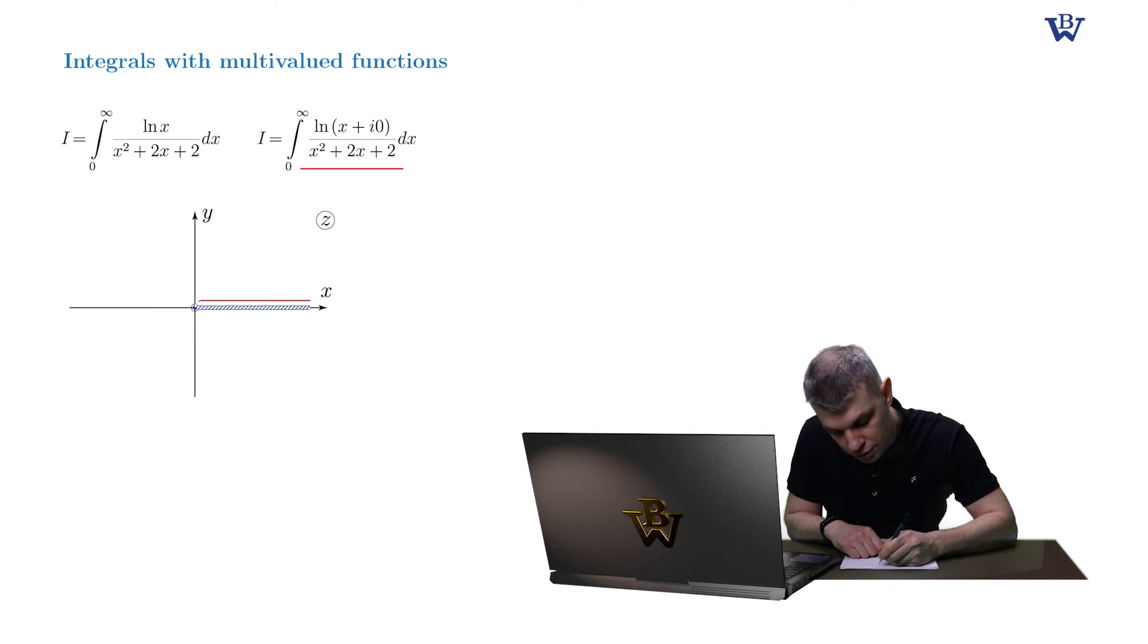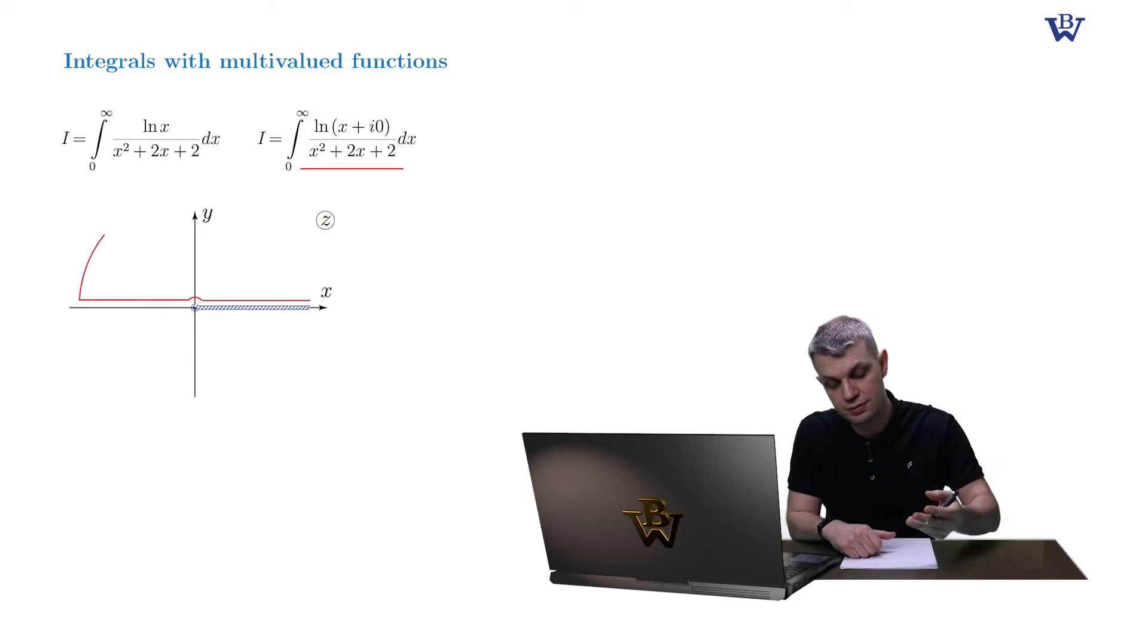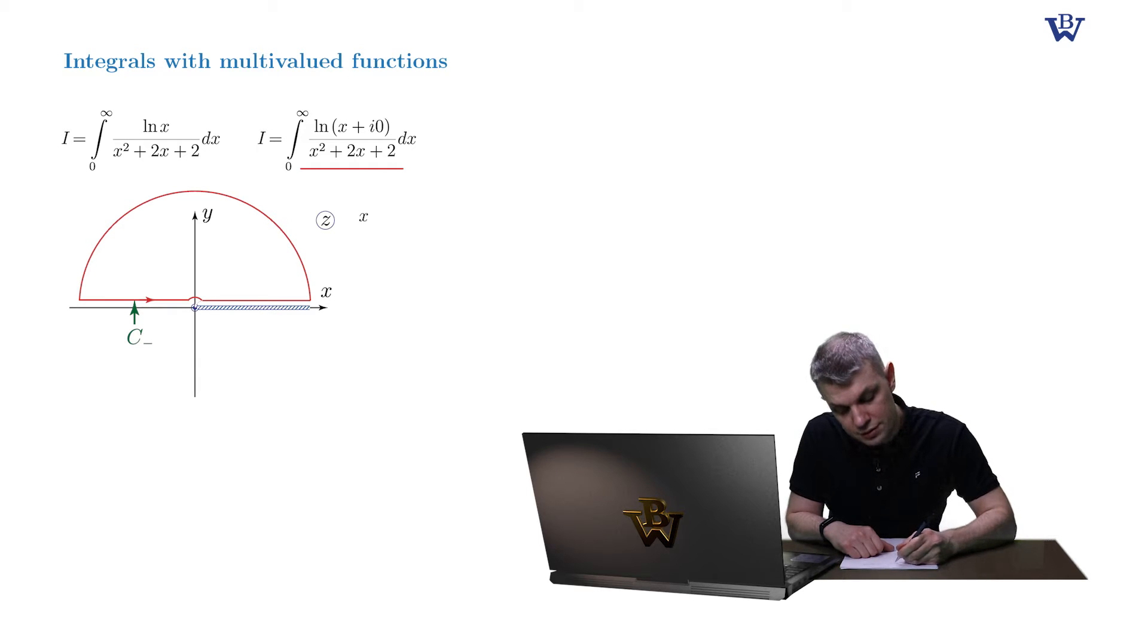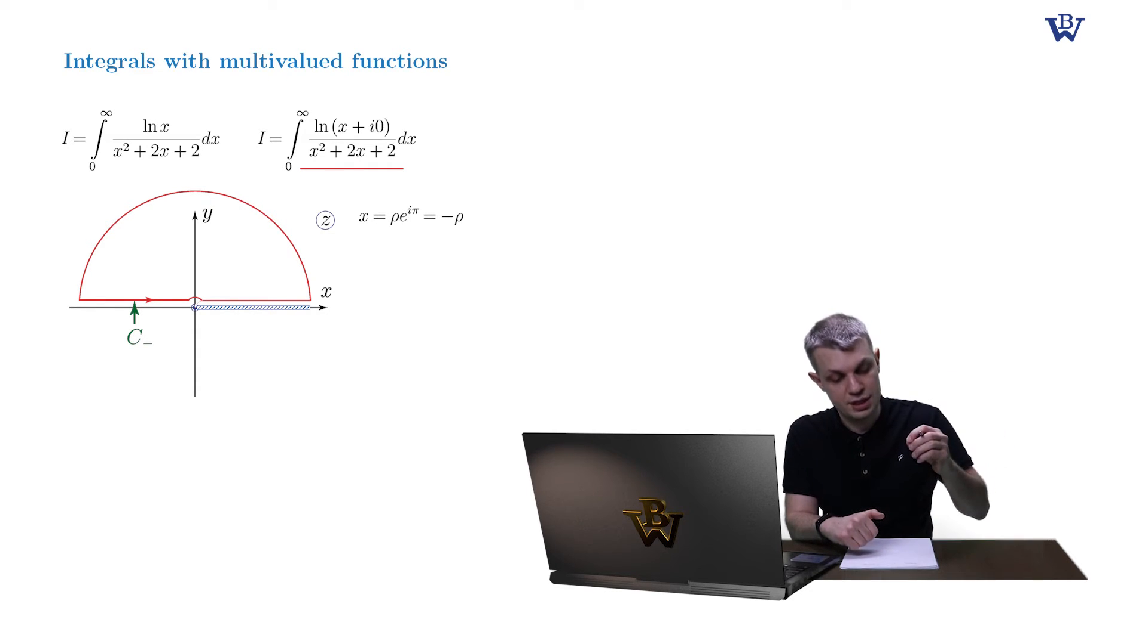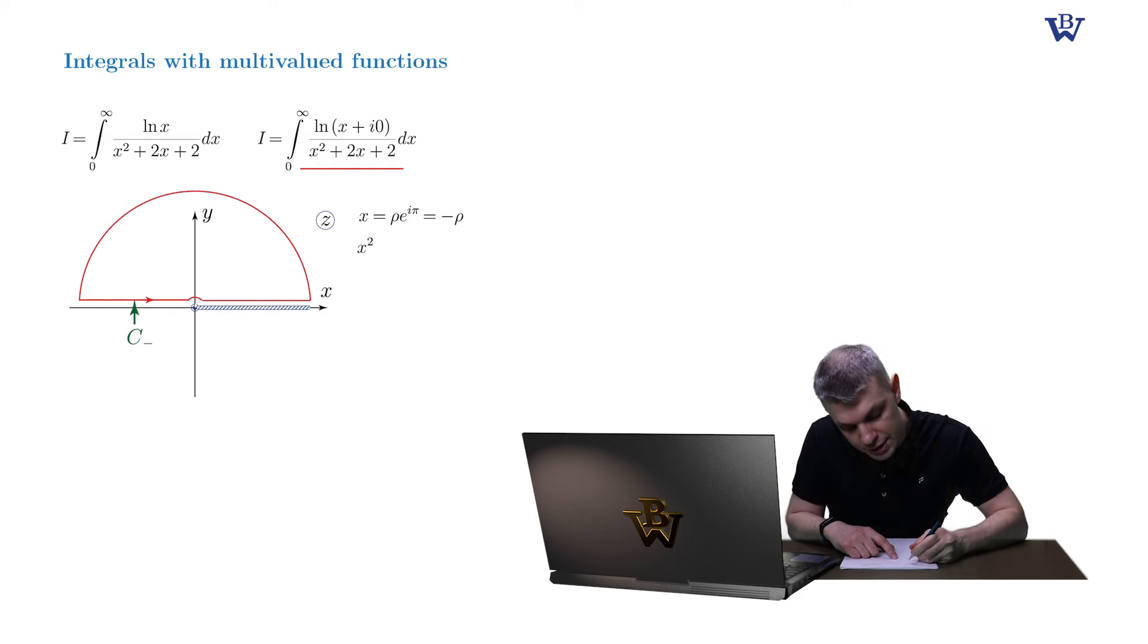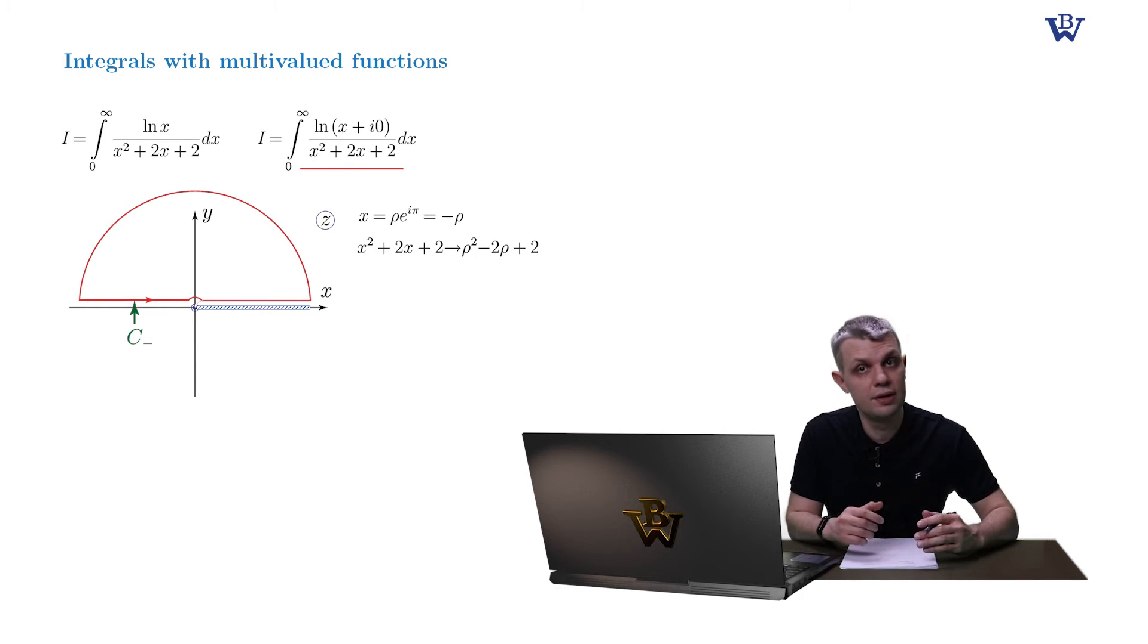To see this, let's draw this open dumbbell, complete with two semi-circles, and consider the integral along its left leg. There we introduce the standard parameterization x equals rho times e to i pi, which is effectively minus rho. And once we plug in this change into our integrand, we will see that the denominator of our function is changed.